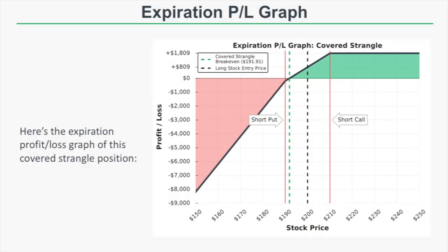Looking at the expiration risk profile graph, we see the short put strike, the short call strike, the initial stock purchase price of $200, and the break-even of $191.91. If the stock price remains at $200 through expiration, the short call and short put expire worthless. With an $8.09 credit collected, our profit at $200 is $809 — zero profit on shares, but $809 profit on the strangle.